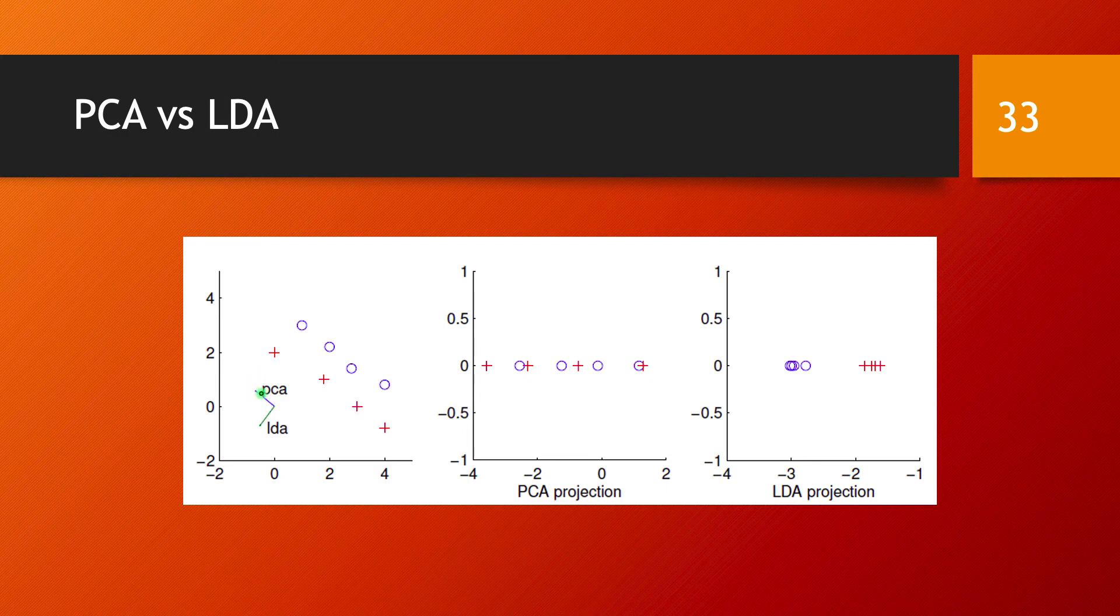So the variance of the data. So that's going to be this vector here because this is where you will have these data points preserved, the distances between them preserved as much as possible. On the contrary,